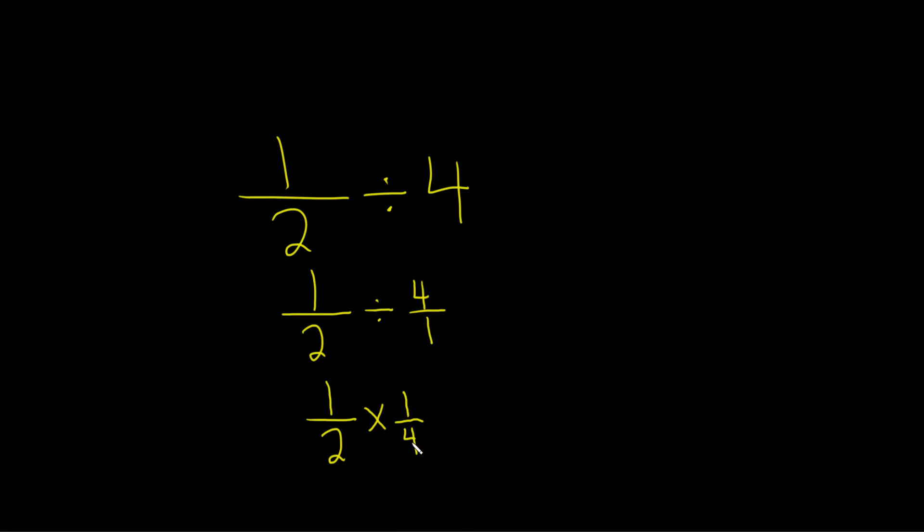Looks like nothing will cancel. The 4 and the 1 don't cancel. The 2 and the 1 don't cancel. So now we just multiply straight across. 1 times 1 equals 1. 2 times 4 equals 8. And that should be the final answer. I hope this video has been helpful.